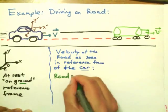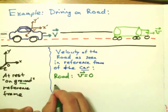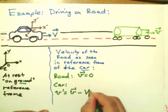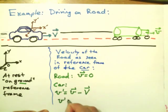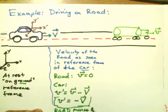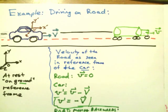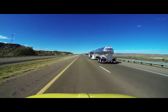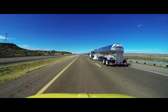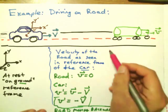The road has a velocity of zero in the original reference frame. But in the car frame, V-prime equals V minus capital V, which is zero minus capital V, so V-prime equals minus V. The road is moving backwards with respect to the car — the lines on the road go backwards at a speed corresponding to the speed of the car.